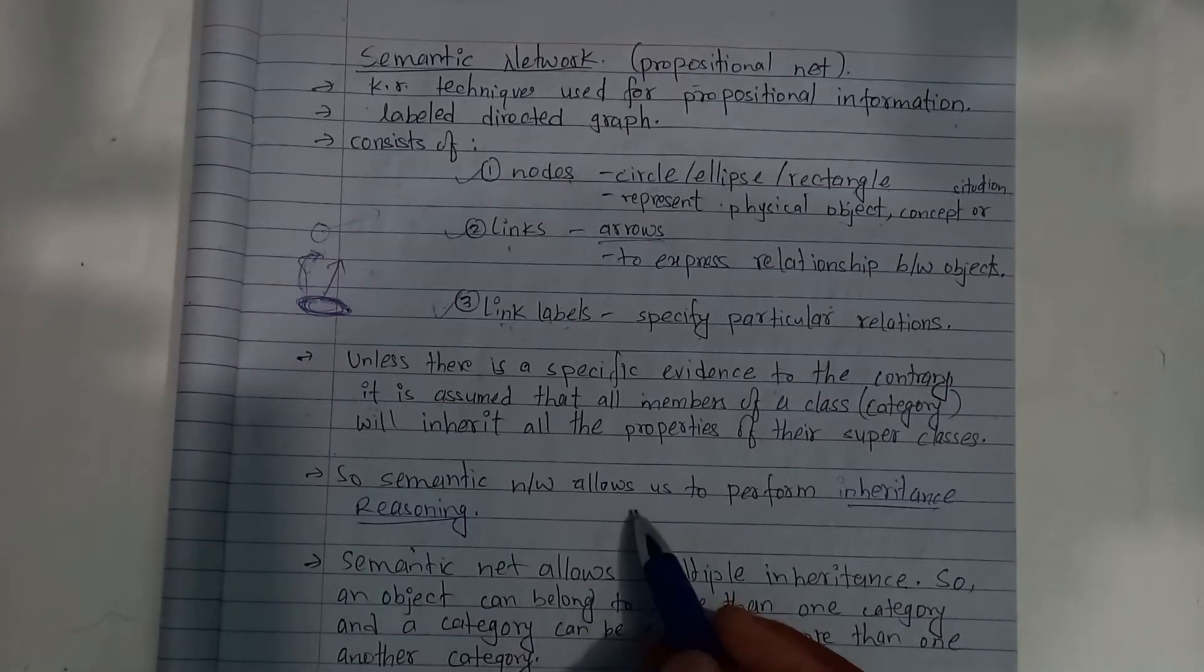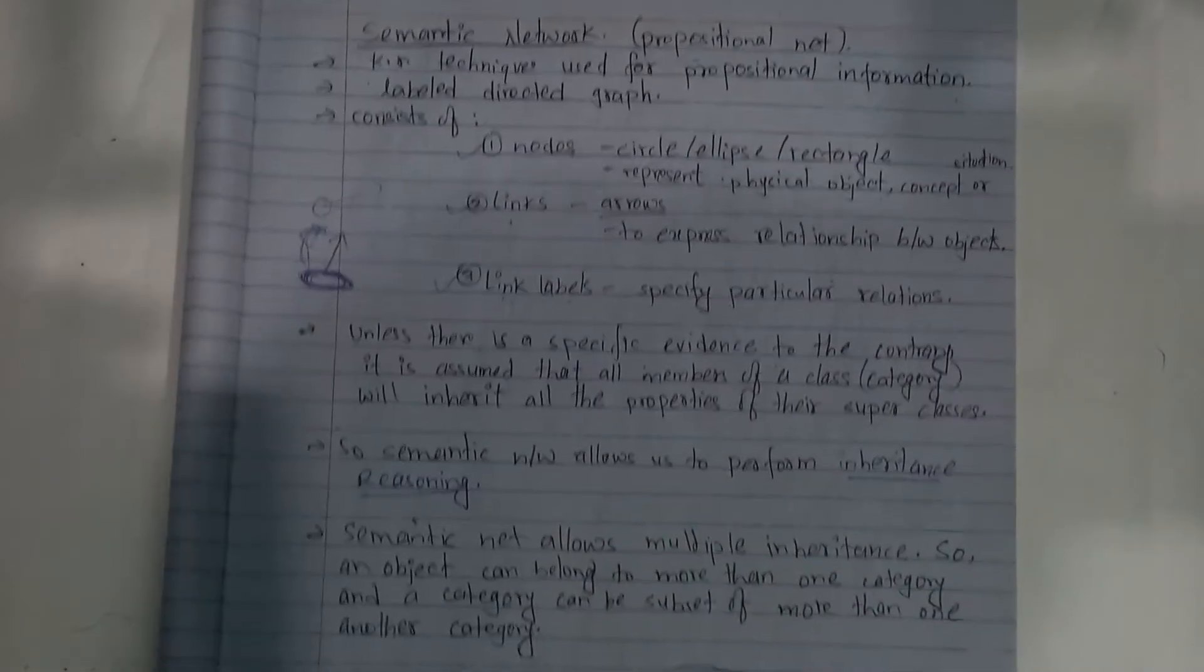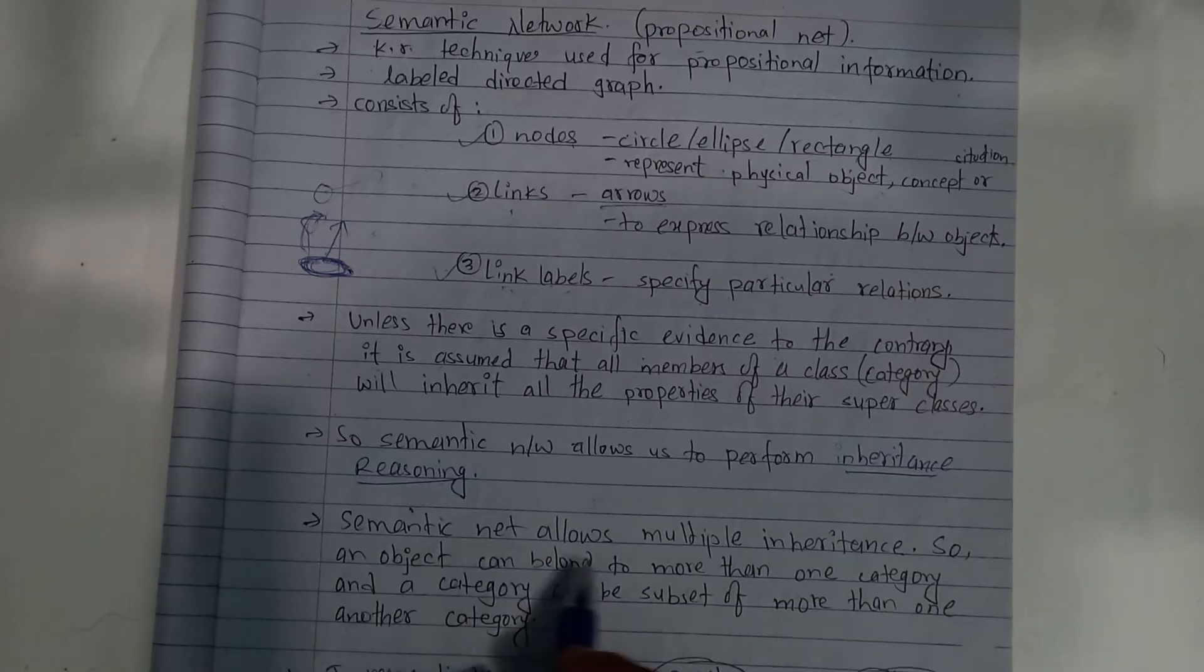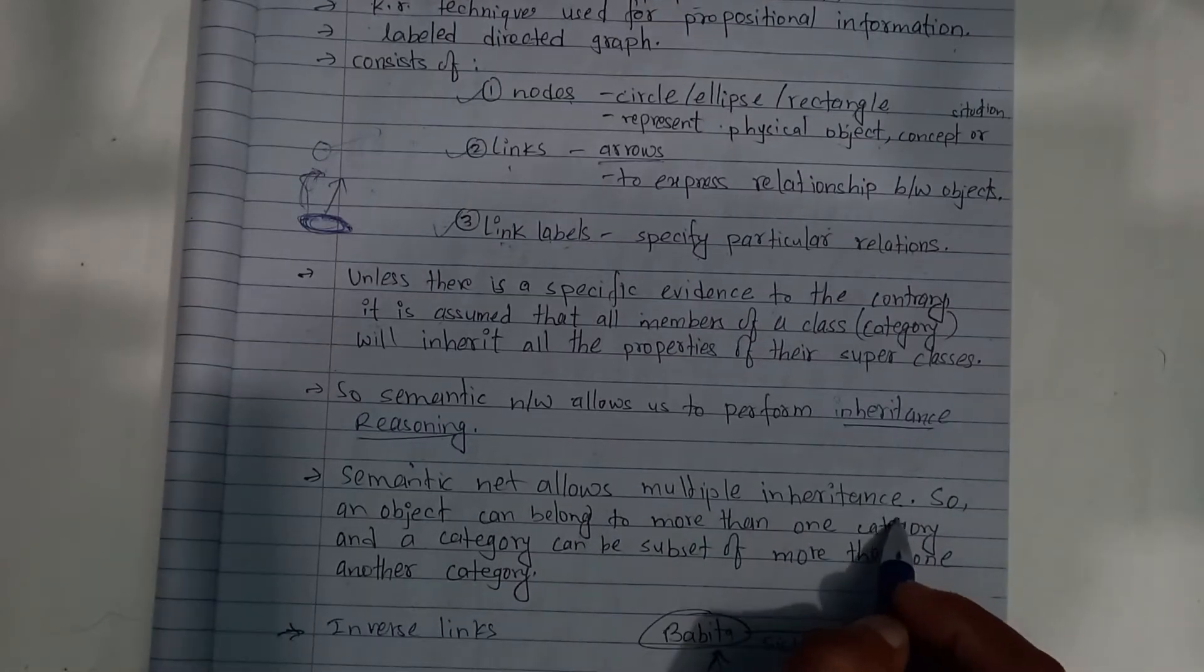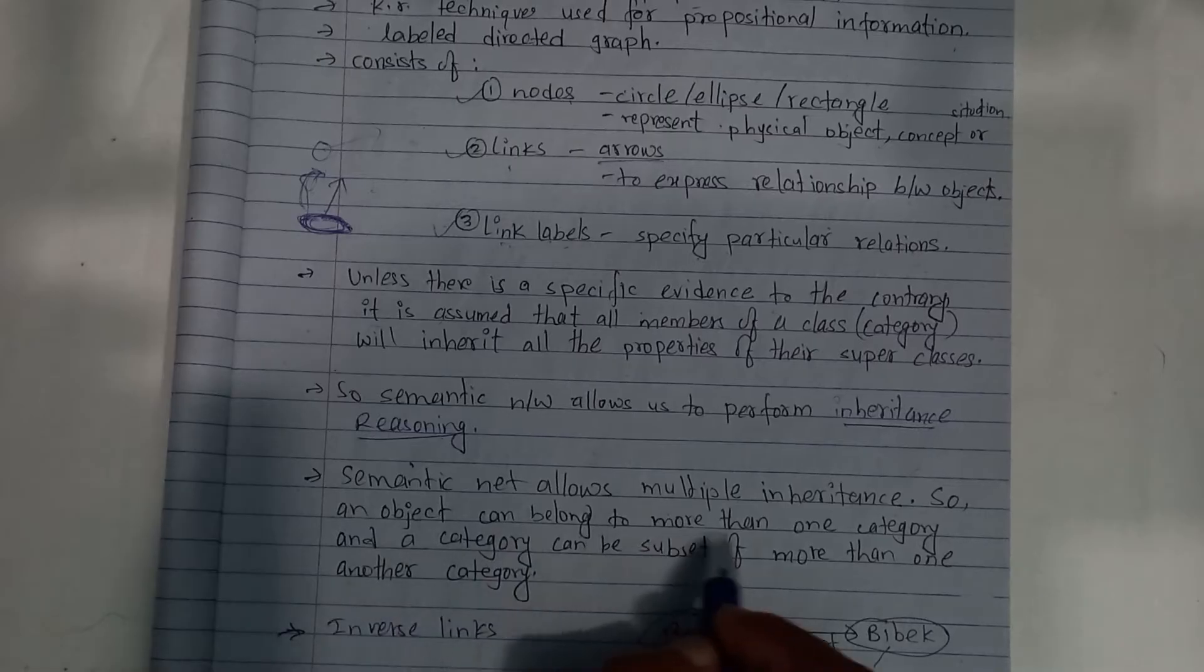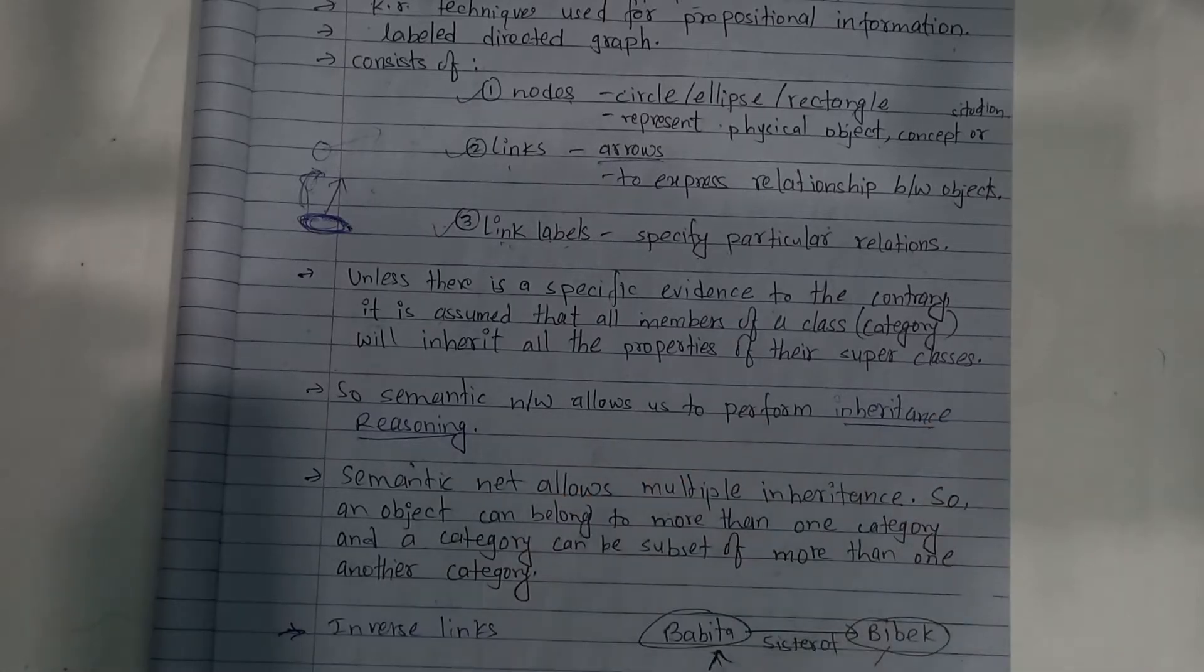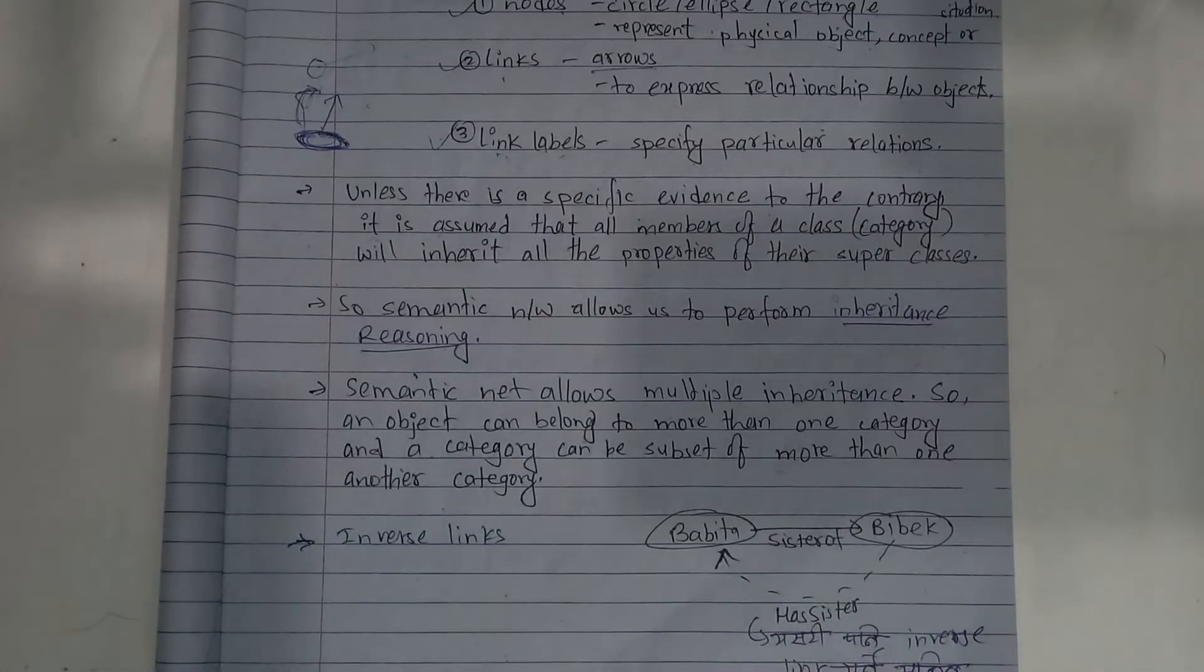Semantic net allows us to perform inheritance reasoning. Semantic net allows multiple inheritance, so an object can belong to more than one category, and a category can be a subset of more than one other category.